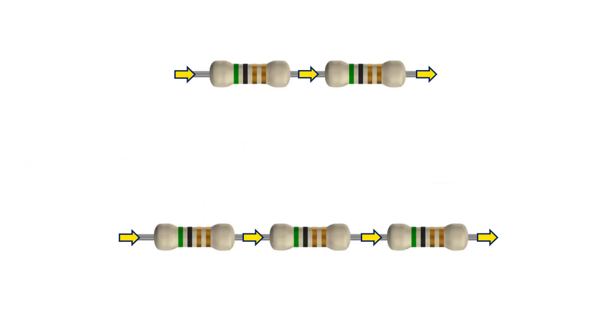A serial connection happens when we connect components side by side. There is only one path through which electrons can flow in this connection. Thus, the same current flows through all circuit elements connected in series.